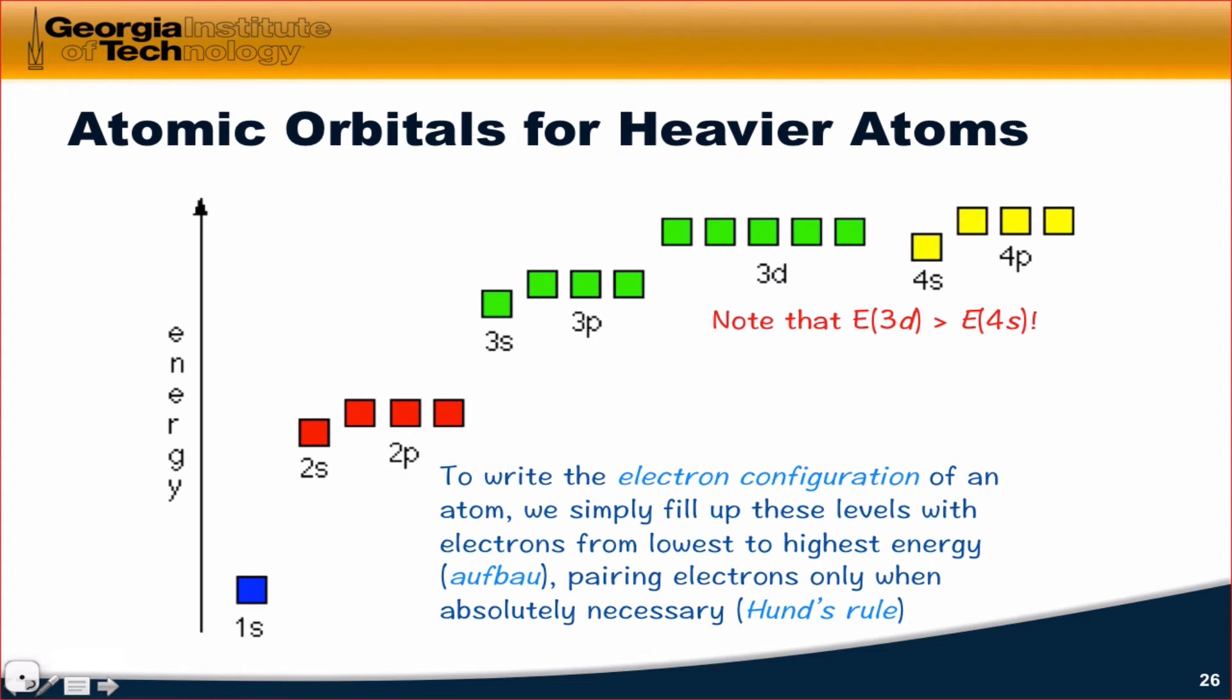So for example, if we wanted to build the electron configuration of carbon, which has six electrons, we'd put a spin up in the 1s and then a spin down. There's two electrons. We now must move up to the 2s level, because according to the Pauli exclusion principle, we can't throw another spin down electron in the 1s orbital.